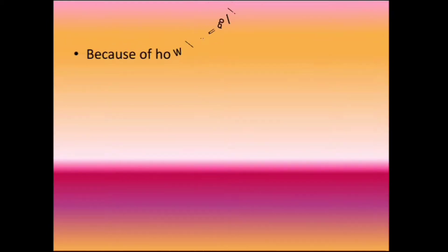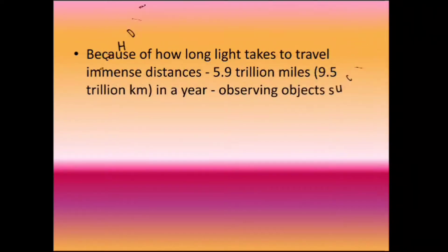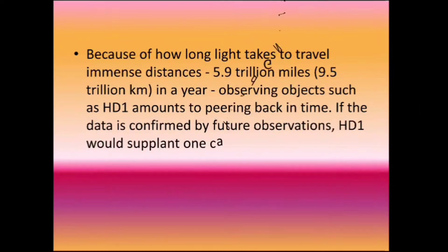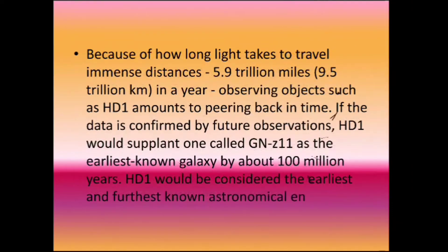Because of how long light takes to travel immense distances in a year, observing objects such as HD1 amounts to peering back in time. If the data is confirmed by future observations, HD1 would supplant one called GNZ 11 as the earliest known galaxy by about 100 million years. HD1 would be considered the earliest and furthest known astronomical entity.